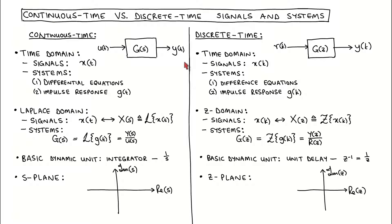The signals we consider are discrete time signals, which are only defined at integer values of the time index k. We contrast them to continuous time signals, which are defined for any real value of the time variable t. The systems we consider are linear time invariant discrete time systems, here depicted with input signal r of k and output signal y of k. We contrast them to linear time invariant continuous time systems, here depicted with input signal u of t and output signal y of t.